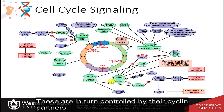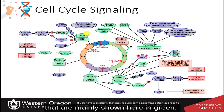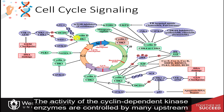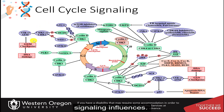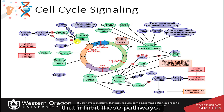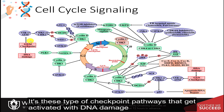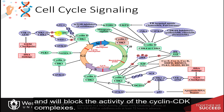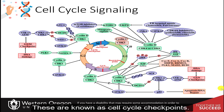These are in turn controlled by their cyclin partners, that are mainly shown here in green. The activity of the cyclin-dependent kinase enzymes are controlled by many upstream signaling influences. Some of these are positive pathways and others are checkpoint regulators that inhibit these pathways. It's these checkpoint pathways that get activated with DNA damage and will block the activity of the cyclin-CDK complexes. These are known as cell cycle checkpoints.